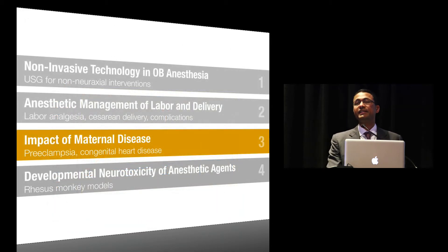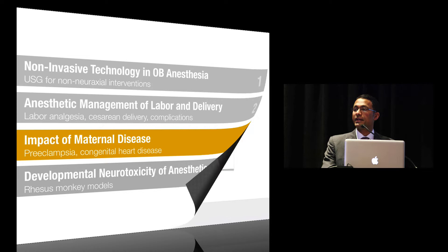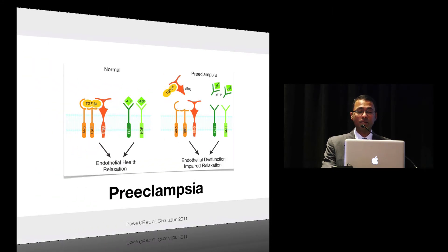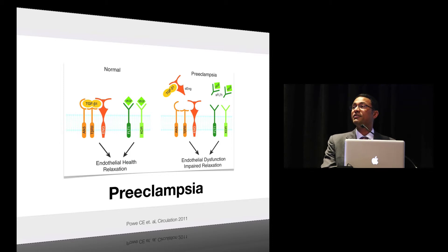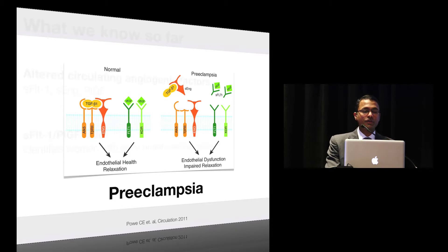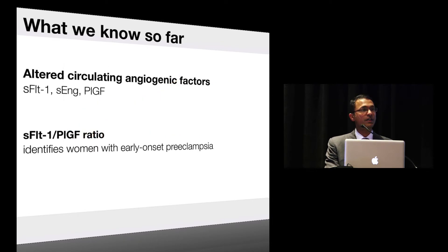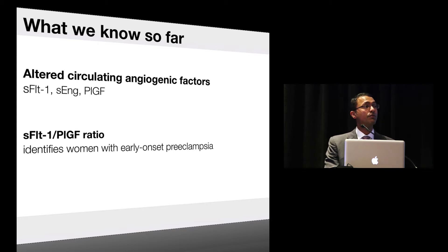Moving on to the impact of maternal diseases, I'm going to highlight two studies: one on preeclampsia and the other on congenital heart disease. We all know that preeclampsia is one of the leading causes of maternal and fetal mortality and morbidity, and tailored management has been a challenge because of a lack of prognostic biomarkers. What we know is that preeclampsia is characterized by altered circulating angiogenic factors, especially sFlt-1 and placental growth factor, and the sFlt-1 to placental growth factor ratio is able to identify women with early onset preeclampsia. This year, two studies factor this ratio into clinical decision making.